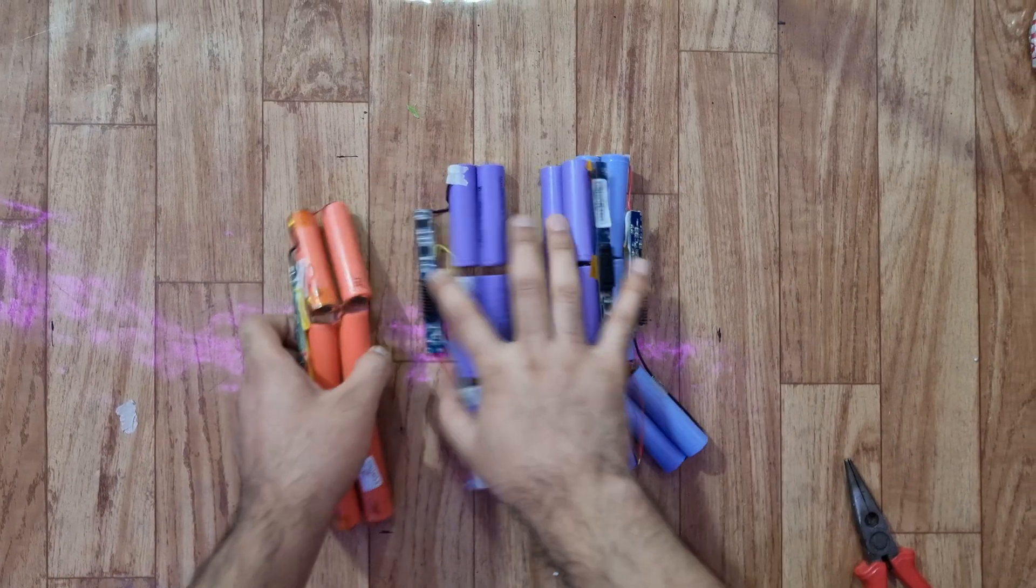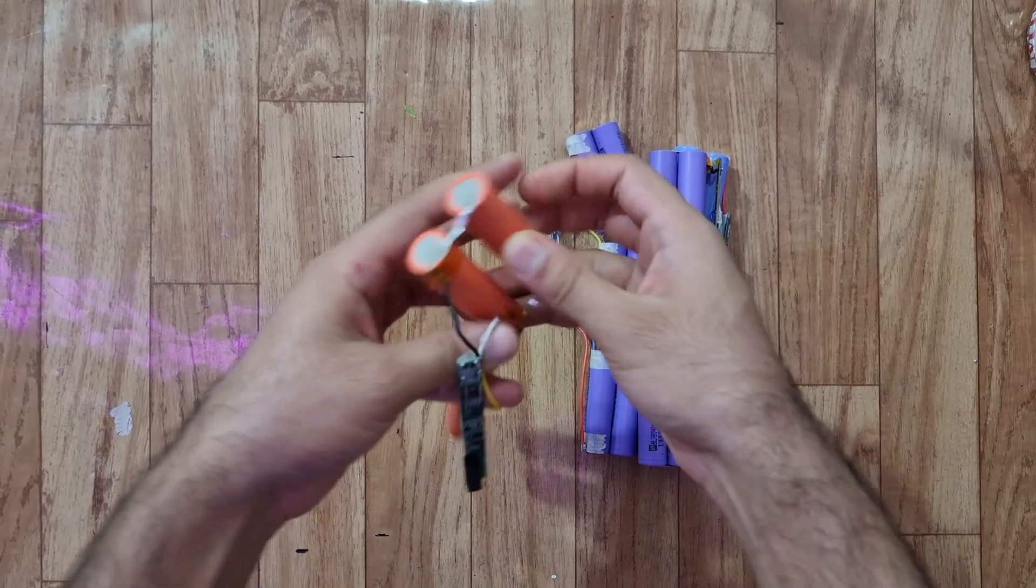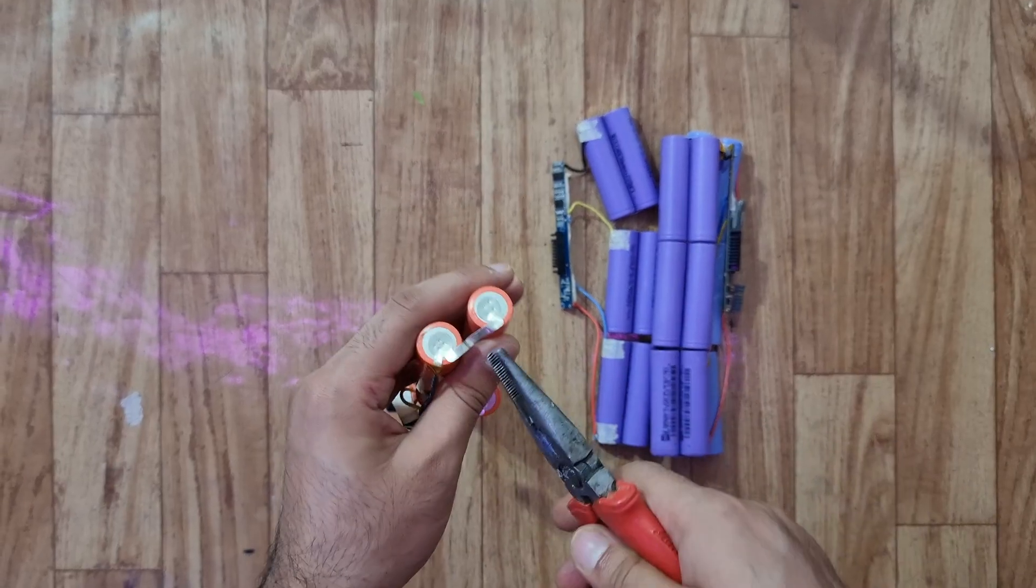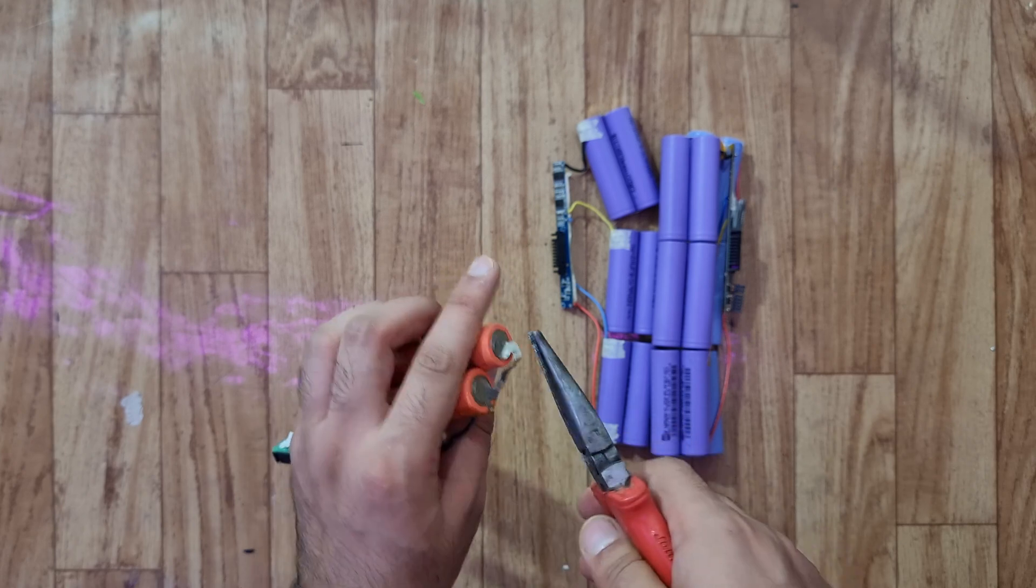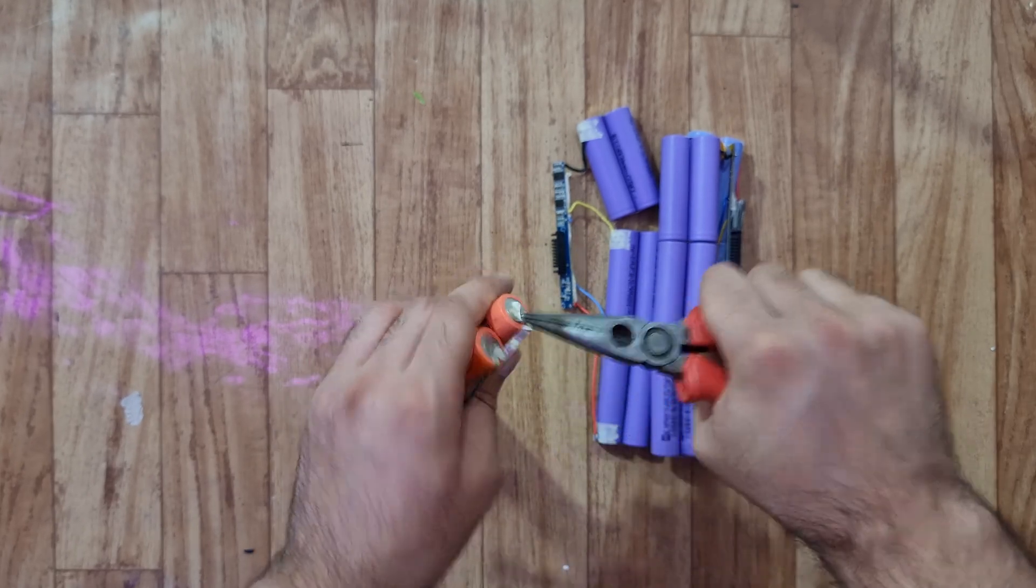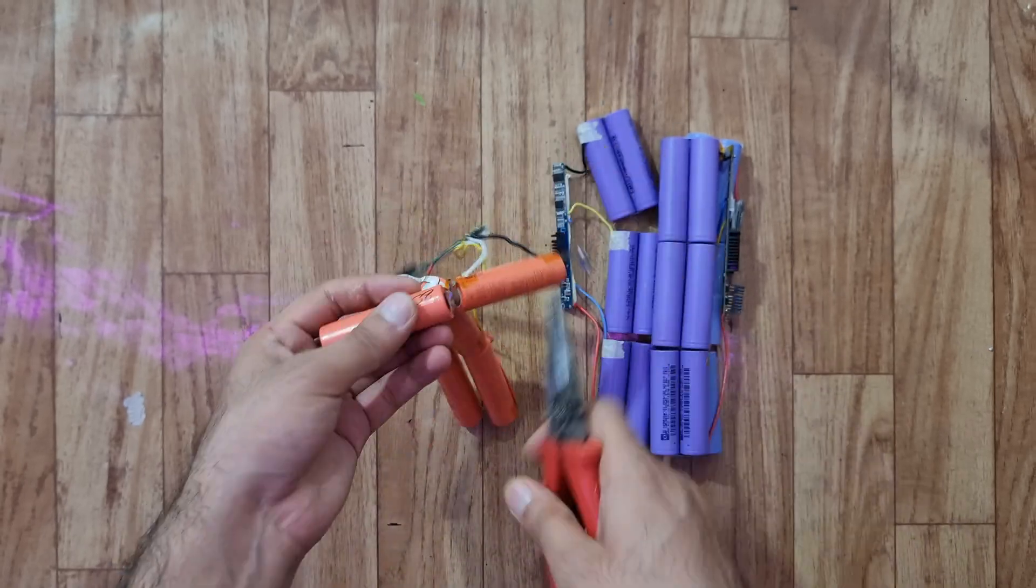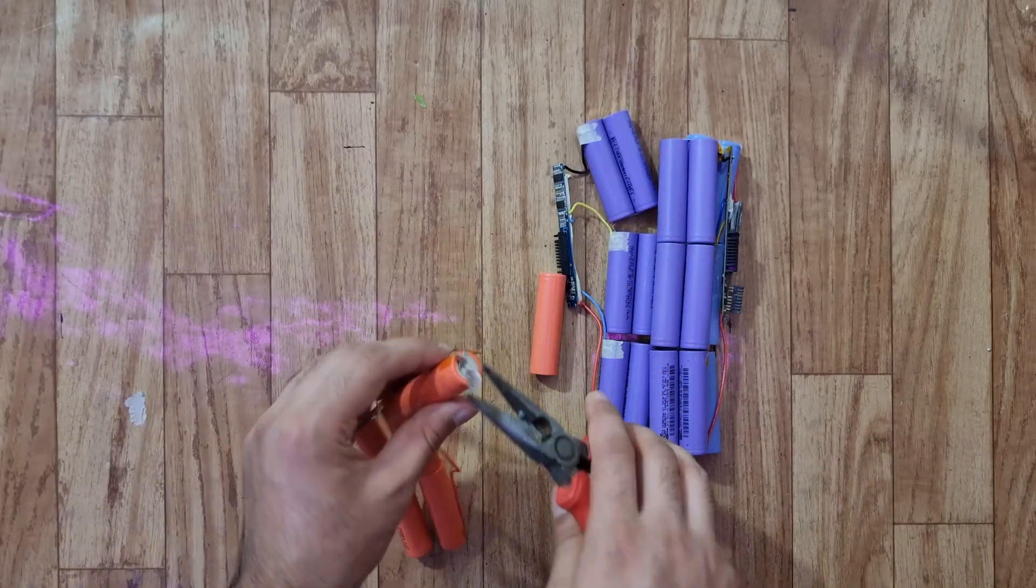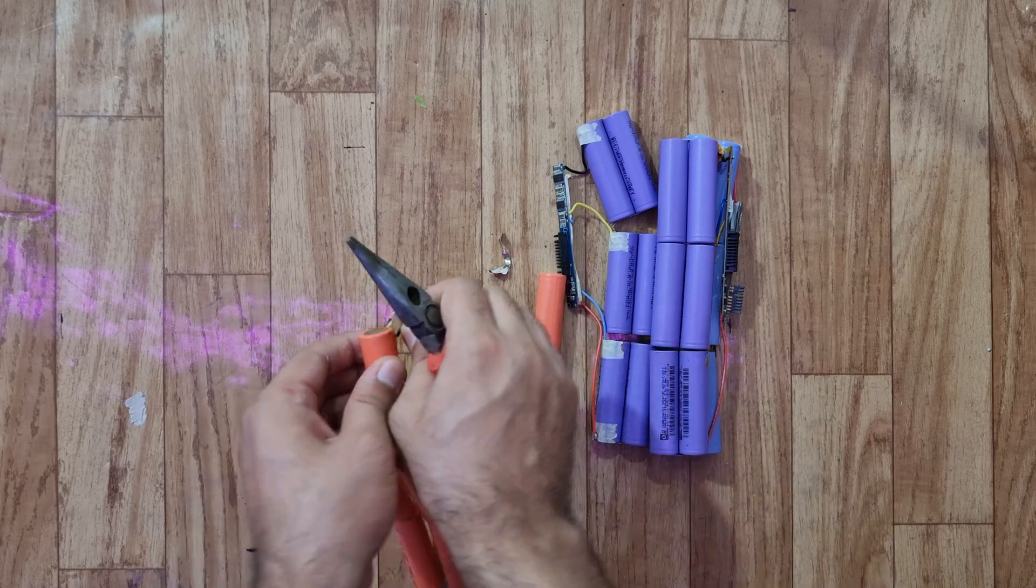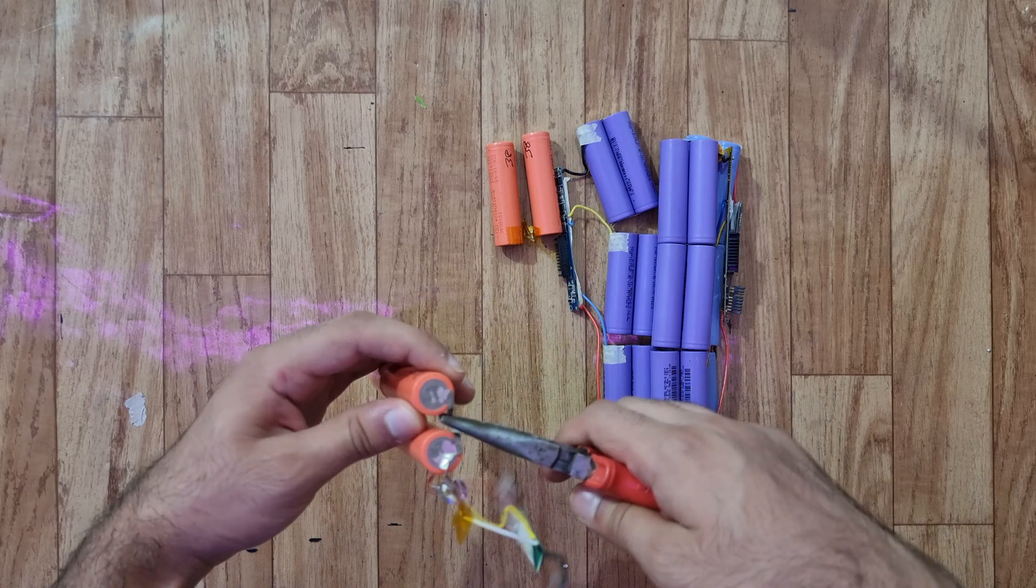Now all the lithium ion cells are out of their case. Let's separate them from each other, and to do so we will use some pliers. We will basically pull on the spot welds and they should come off. I will do the same with the remaining cells and also fast forward through this bit, and we will carry on the video once all the cells are separated out from each other.